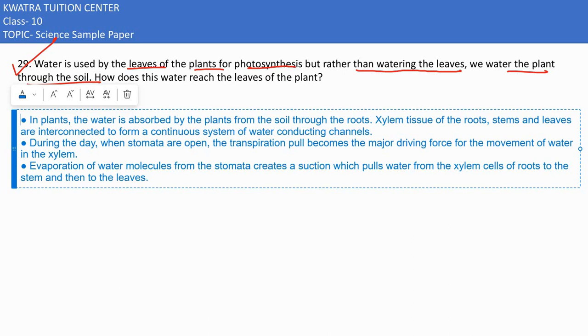Evaporation of water molecules from the stomata creates a suction which pulls water from the xylem cells of roots to the stomata and then to the leaves.